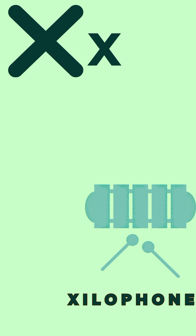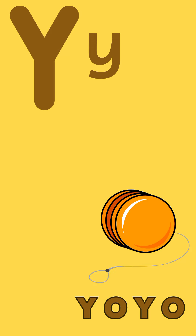X for Xylophone. X, Y, L, O, P, H, O, N, E. Xylophone. Y for Yoyo. Y, O, Y, O. Yoyo. Z for Zebra. Z, E, B, R, A. Zebra.